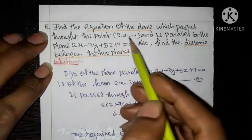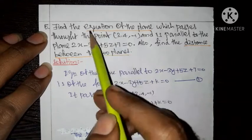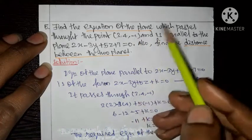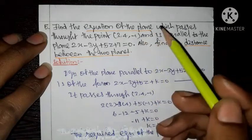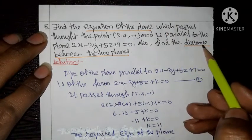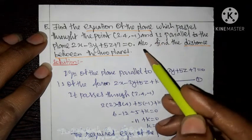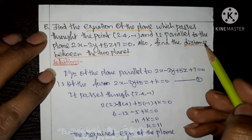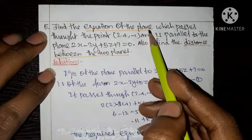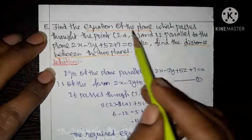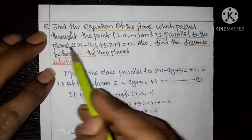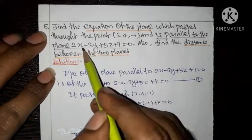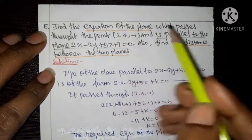We need to find the equation of the plane passing through the given point. Since the planes are parallel, the coefficients of x, y, and z are the same in both equations. Only the constant term is different — it varies. So we use this property to set up the new plane equation.